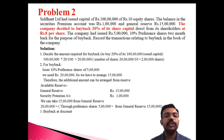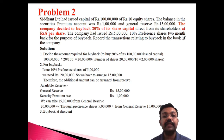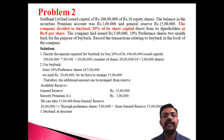Let's move to the second problem. Siddhaanth Limited had issued capital of rupees 1 crore — rupees 10 equity shares (face value 10). Balance in security premium account is 1 lakh, general reserve 15 lakh. The company desired to buy back 20% of share capital. Buyback price from shareholders is rupees 8. The company issued 5 lakh 10% preference shares for the purpose of the buyback.